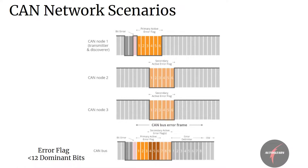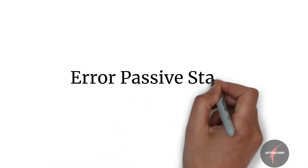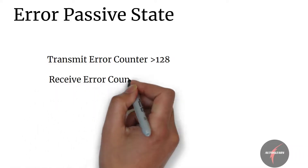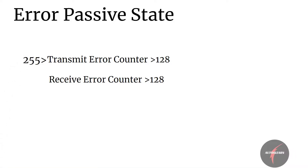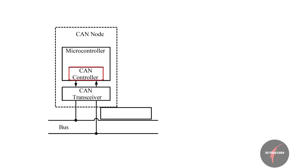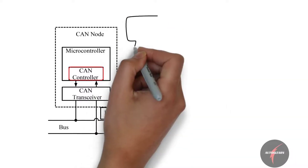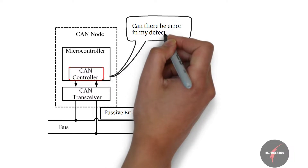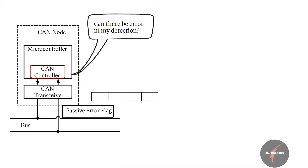Now let's look into the error passive state. The error passive state is activated in a node when the transmit error counter is greater than 128 or the receive error counter is greater than 128, but both are still less than 255. If the node identifies quite a number of transmit or receive errors, it will send out a passive error flag indicating other ECUs that there seems to be some error in the network — but this time it could also mean there is some error in the detected ECU itself. In this state, the error flag that appears in the network is 6 error flag bits of recessive value.